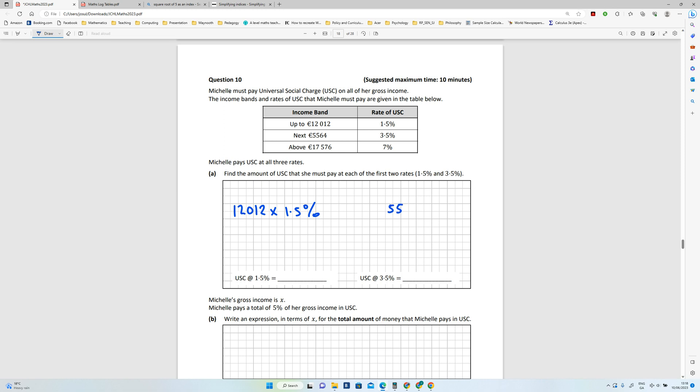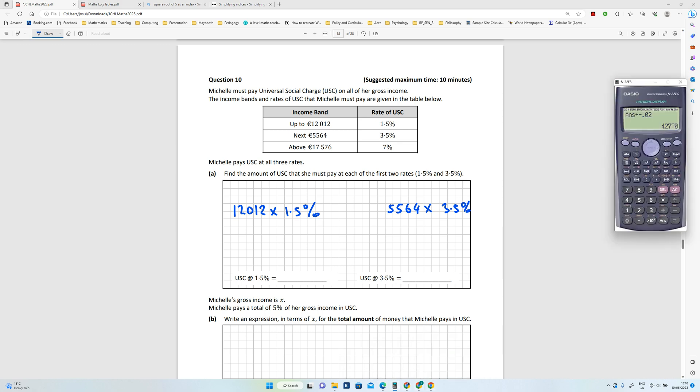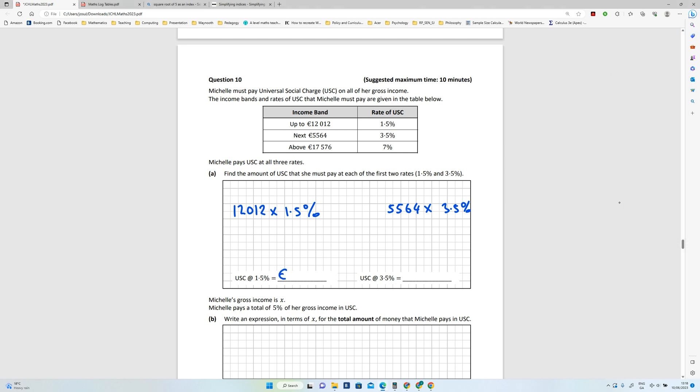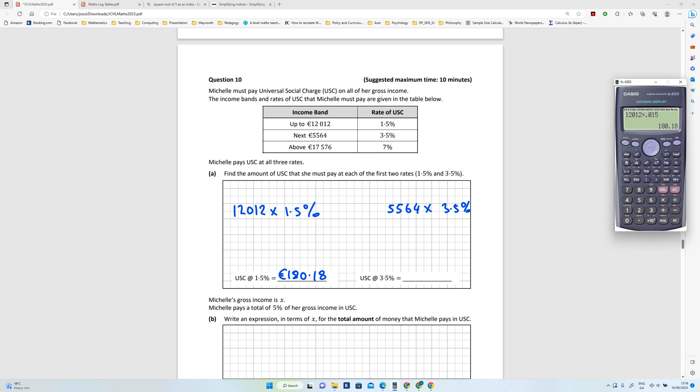Okay, so we'll just use the calculator for that. So 12,012 multiplied by 0.015, that is the same as saying one and a half percent, and that is 180 euros and 18 cent. That's the first one.